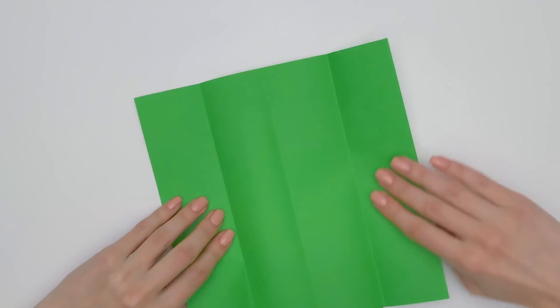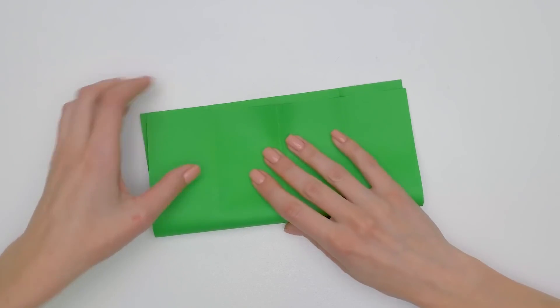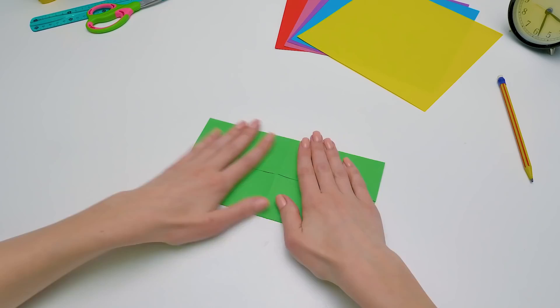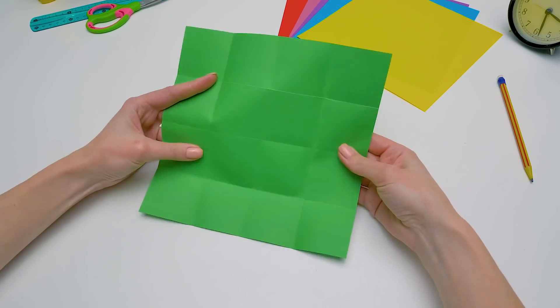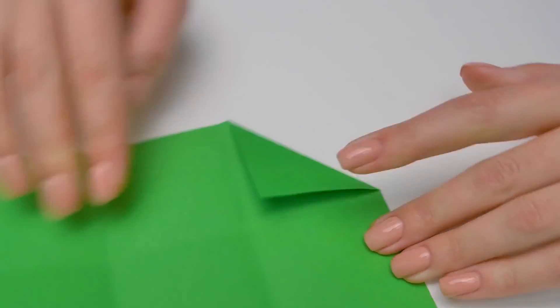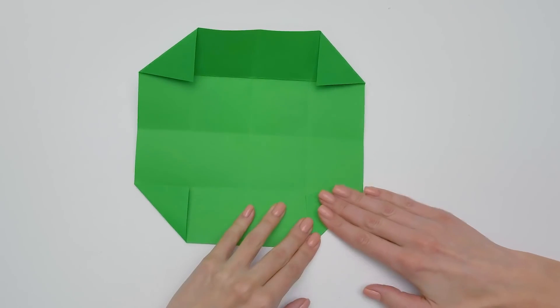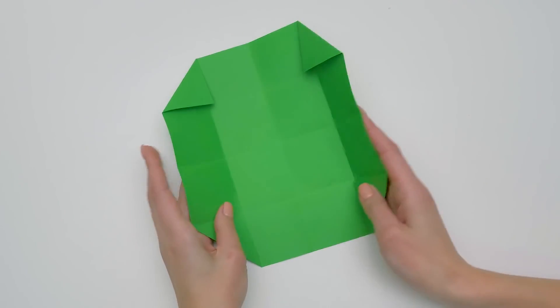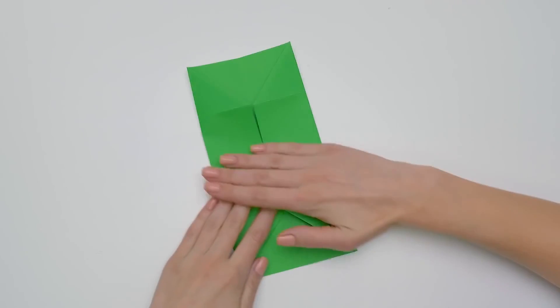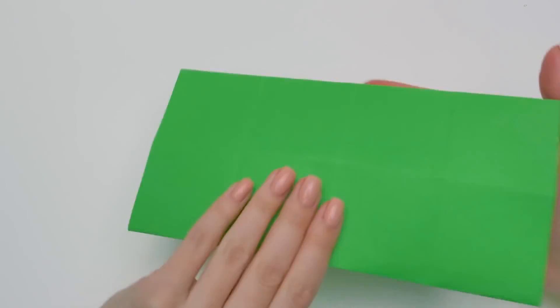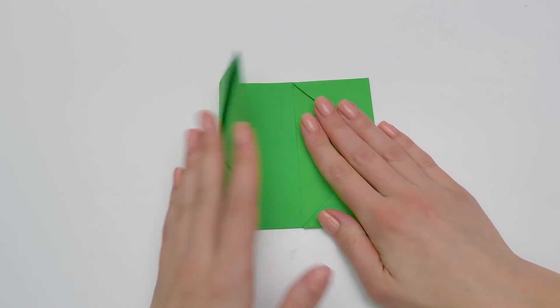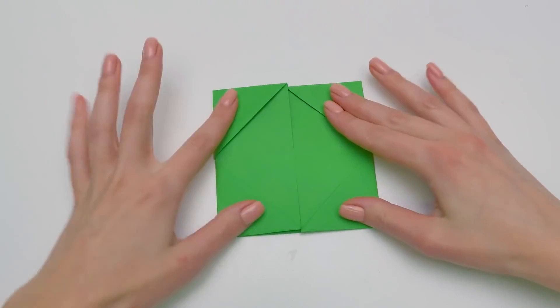Okay, now do exactly the same on the other side. The main thing is not to get confused. Alright, now let's fold each of the sheet's corners. So, what exactly are we working on? It's a secret. Have patience, you'll find out soon. Now let's bring the corners towards the center. And then we turn the paper over and fold it from both sides, so that the sheet's edges meet in the center.